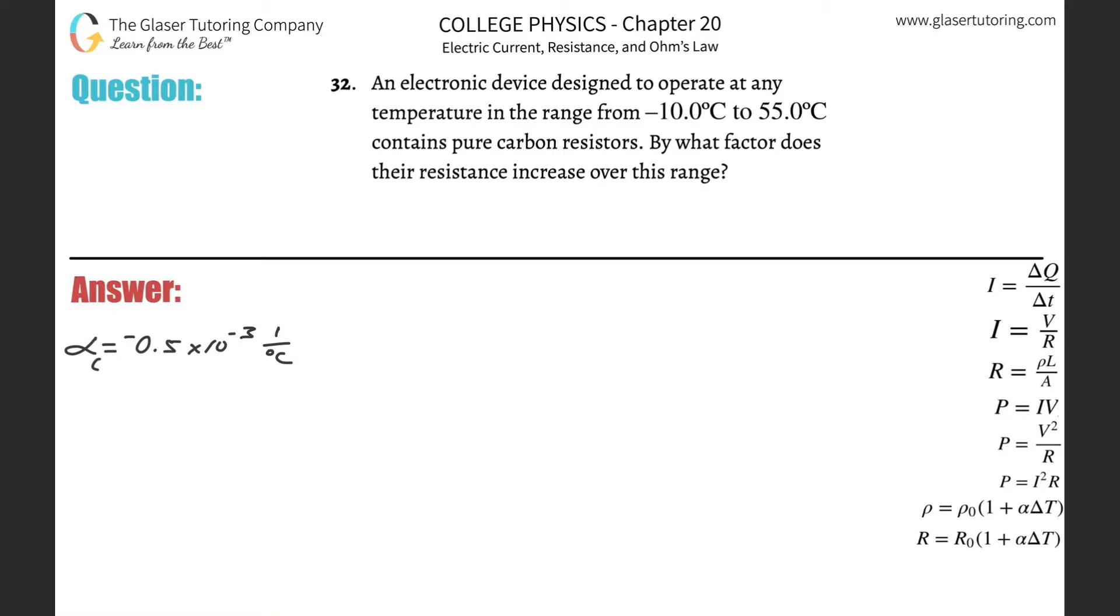Number 32. An electronic device designed to operate at any temperature in the range from negative 10 degrees Celsius to 55 degrees Celsius contains pure carbon resistors. By what factor does their resistance increase over this range?